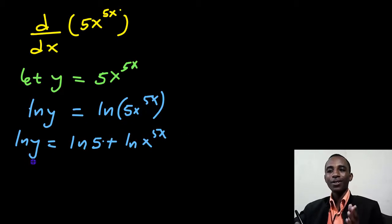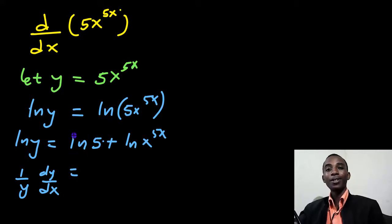The derivative of natural log of y, that's 1 over y, dy/dx. The derivative of natural log of 5. Natural log of 5 is an ordinary number, it's just a number. So that's a 0. And then derivative of this, I don't know that yet.